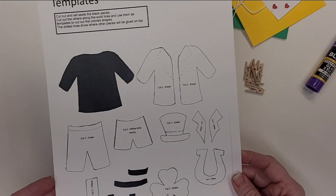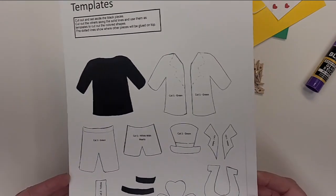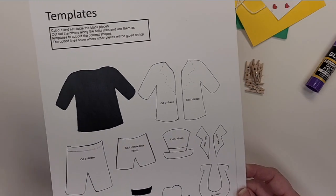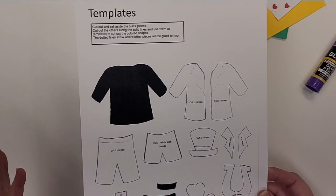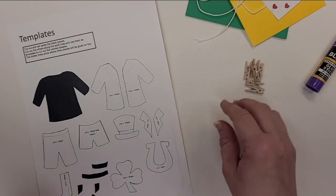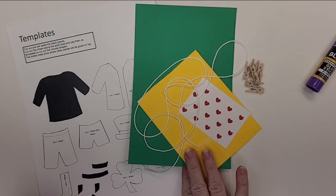And then you'll have this little template that we're going to be used to cut things out. The black pieces are going to be used on their own. The white pieces are going to be used to cut the shapes out of the colored paper.